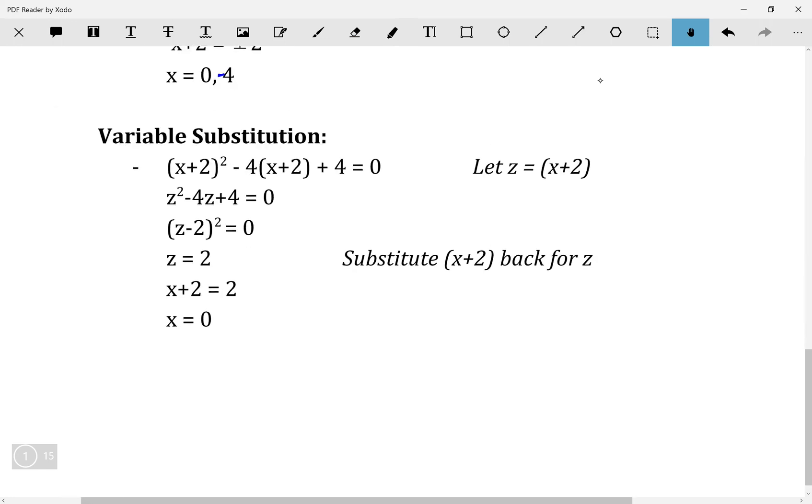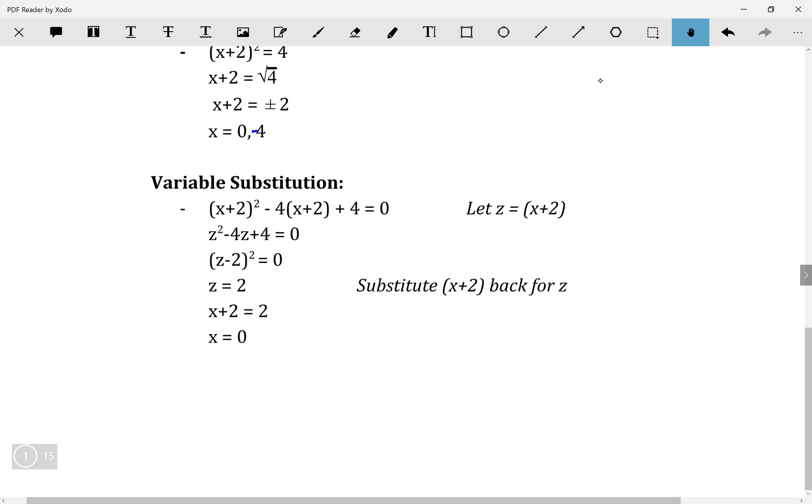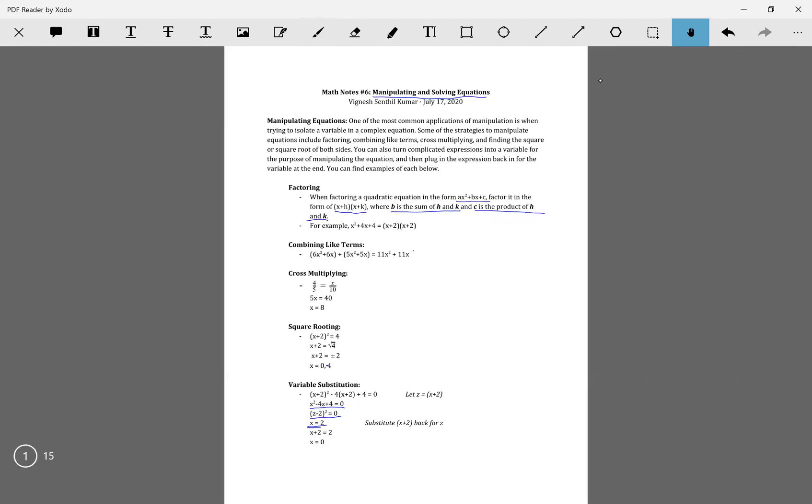Variable substitution. In this case, we have (x+2) squared minus 4 times (x+2) plus 4 equals 0. You can obviously just expand that expression and use distribution. Or to make it even simpler, you can let z equal x plus 2. So you write it as z squared minus 4z plus 4 equals 0. Now you have (z-2) squared equals 0. So z equals 2. And then now we plug back in x plus 2 for z. That gives us x plus 2 equals 2, and x is obviously equal to 0.